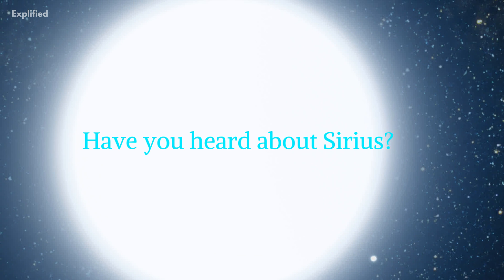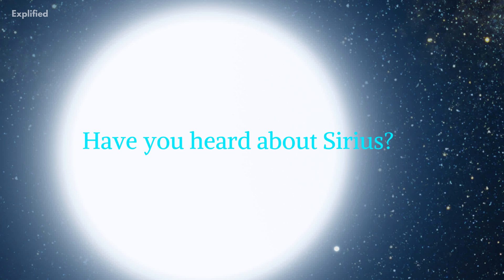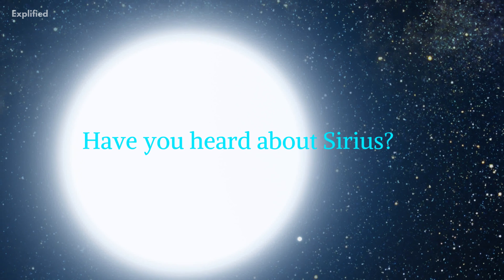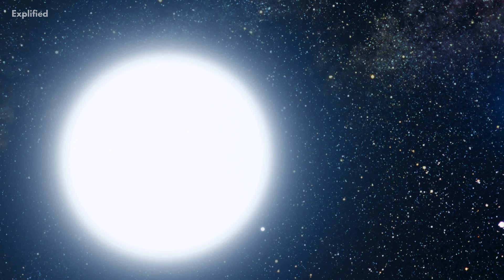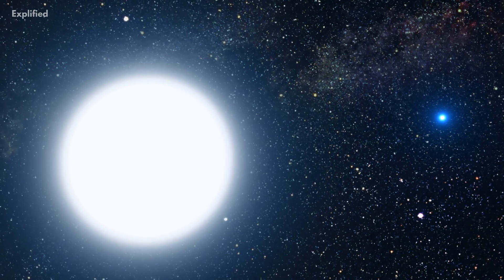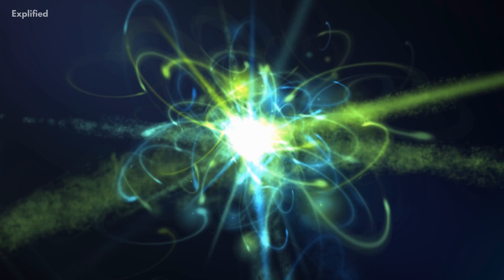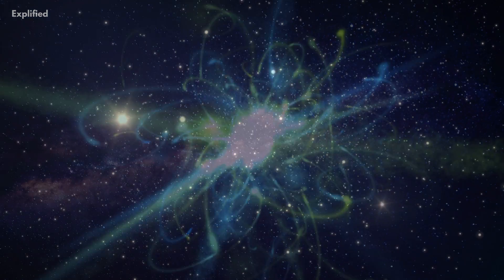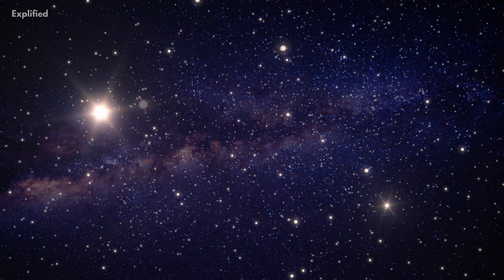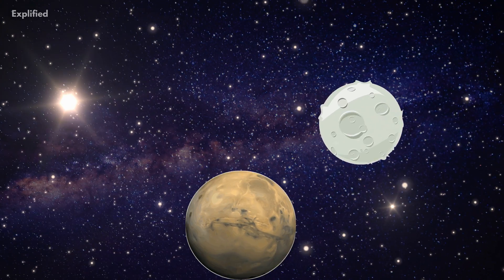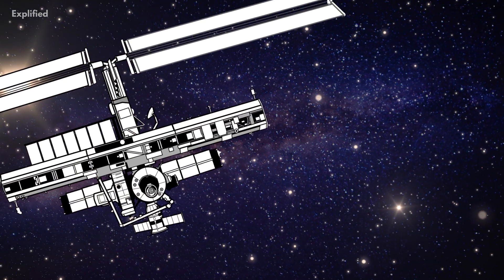Have you heard about Sirius? It is the most luminous star in the night sky above Earth, sometimes referred to as the Dog Star, or Sirius A. The name comes from Greek terminology, which means glowing. It refers to the star's brightness, which is only surpassed by the full moon, a few planets, and the International Space Station.